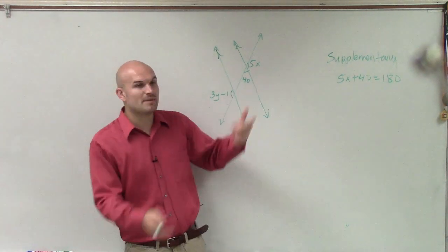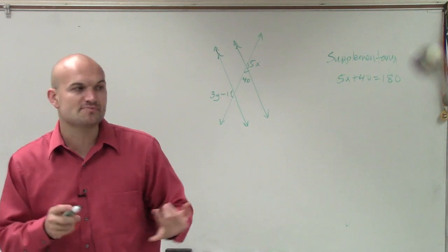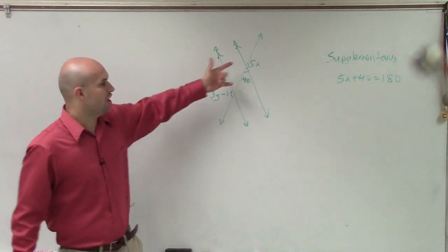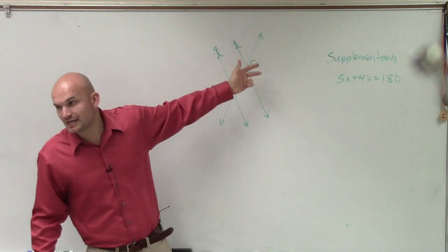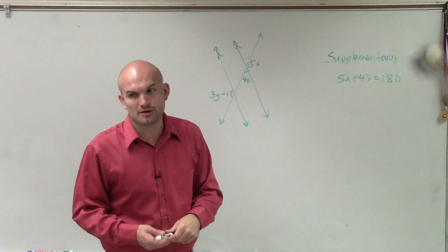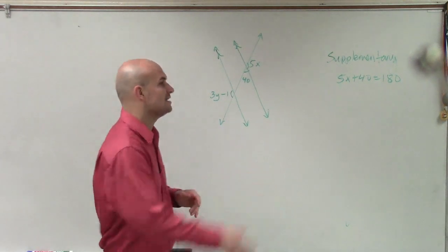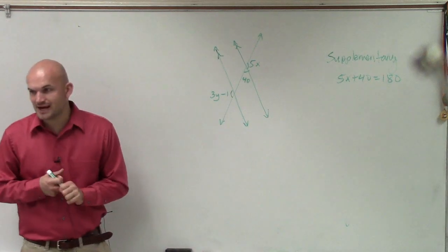Now, again, the main important thing, remember, consecutive interior, alternate interior, alternate exterior and corresponding, those all have to work when we have our parallel lines. But supplementary angles, or a linear pair, does not have to have parallel. We don't need to do anything with parallel lines. But what that does tell us is that now we can solve for x.